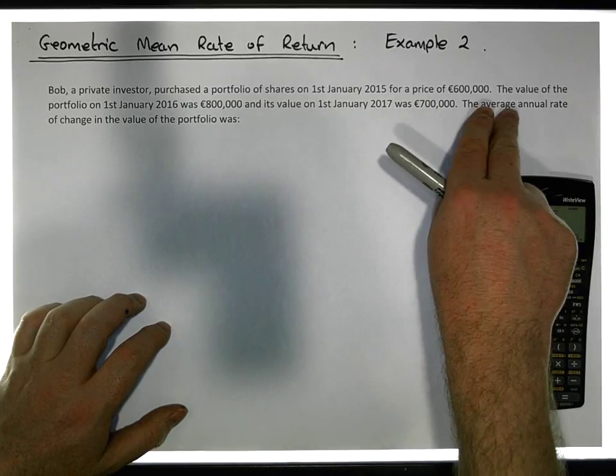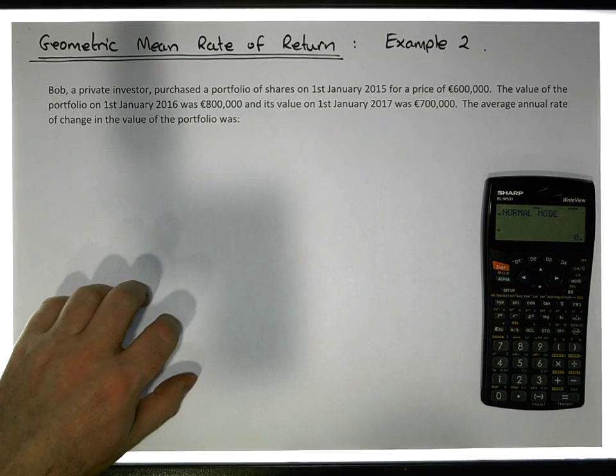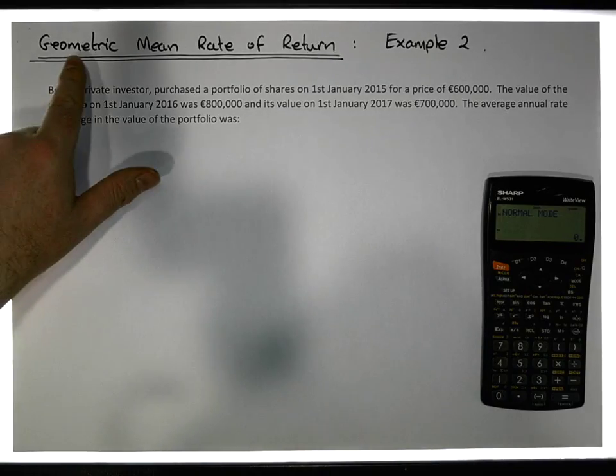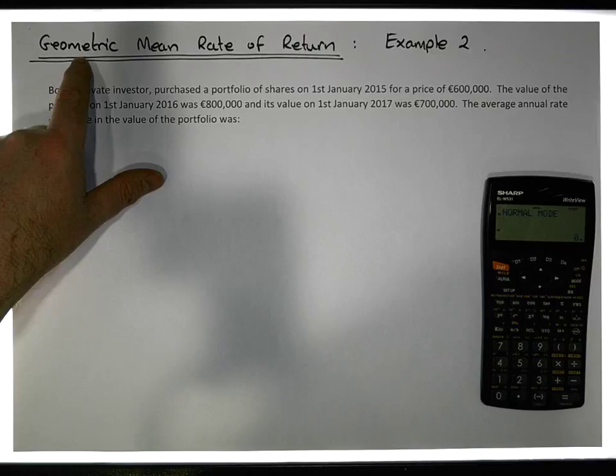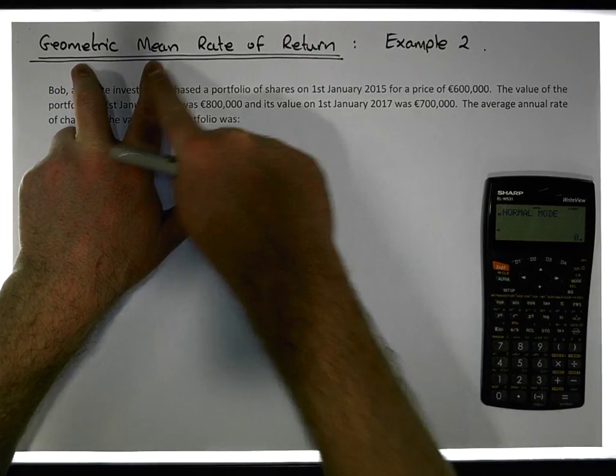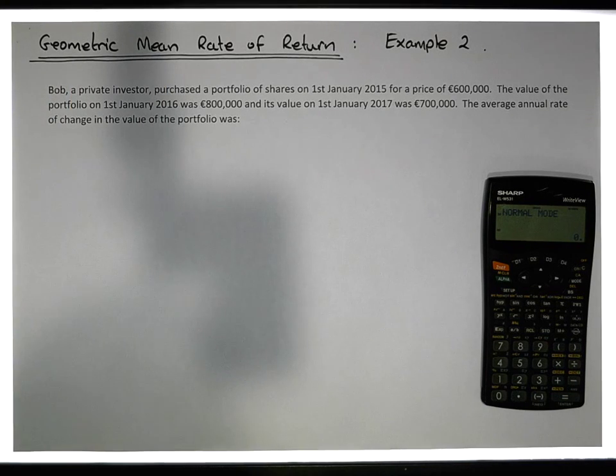What we're asking here is can we calculate the average annual rate of change in the value of the portfolio. When we're looking at rates of change, when we want to calculate averages with respect to rates of change, and because we can have positive and negative rates of change, we're better off using the geometric mean. The geometric mean is a more appropriate measure when we're looking at returns and calculating the average of returns.